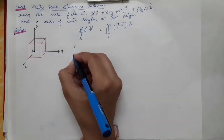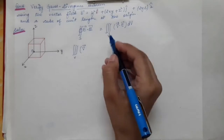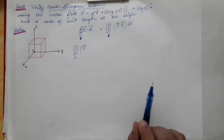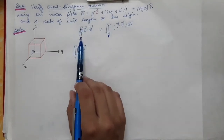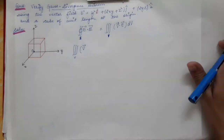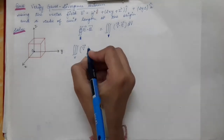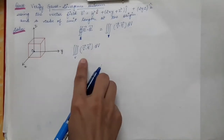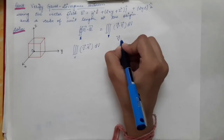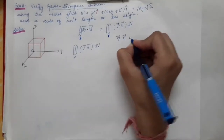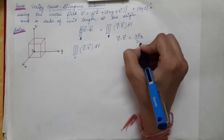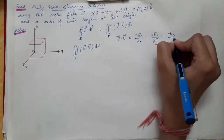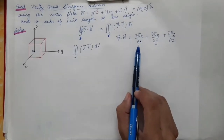On the right-hand side we have the volume integral. The three integrals indicate a volume integral and the two integrals on the left-hand side indicate a surface integral. First we will find the divergence of E using the formula: ∂Ex/∂x + ∂Ey/∂y + ∂Ez/∂z — these are partial differentiations.